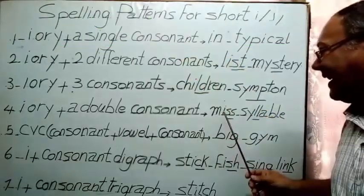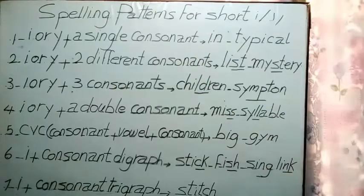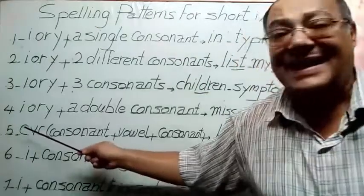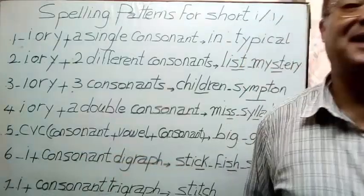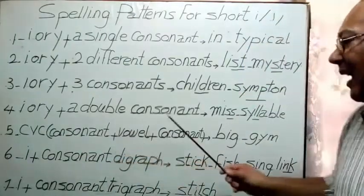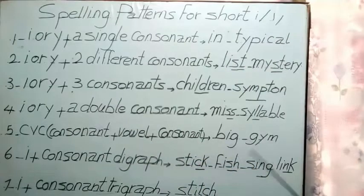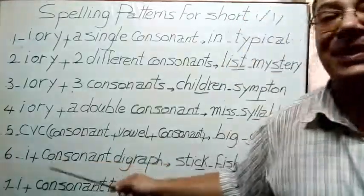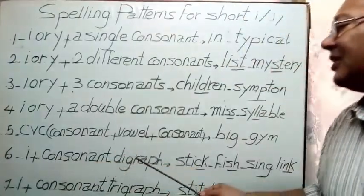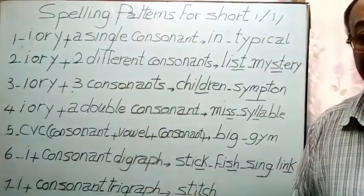Like miss and syllable. CVC pattern: consonant vowel consonant, big, gym. I plus consonant digraph. What is meant by a consonant digraph?